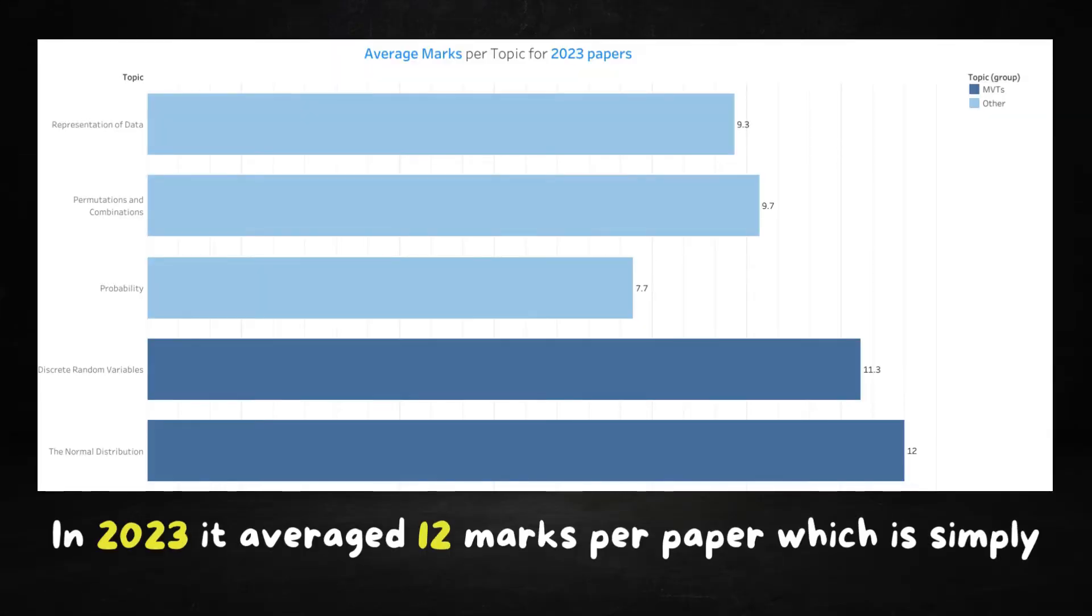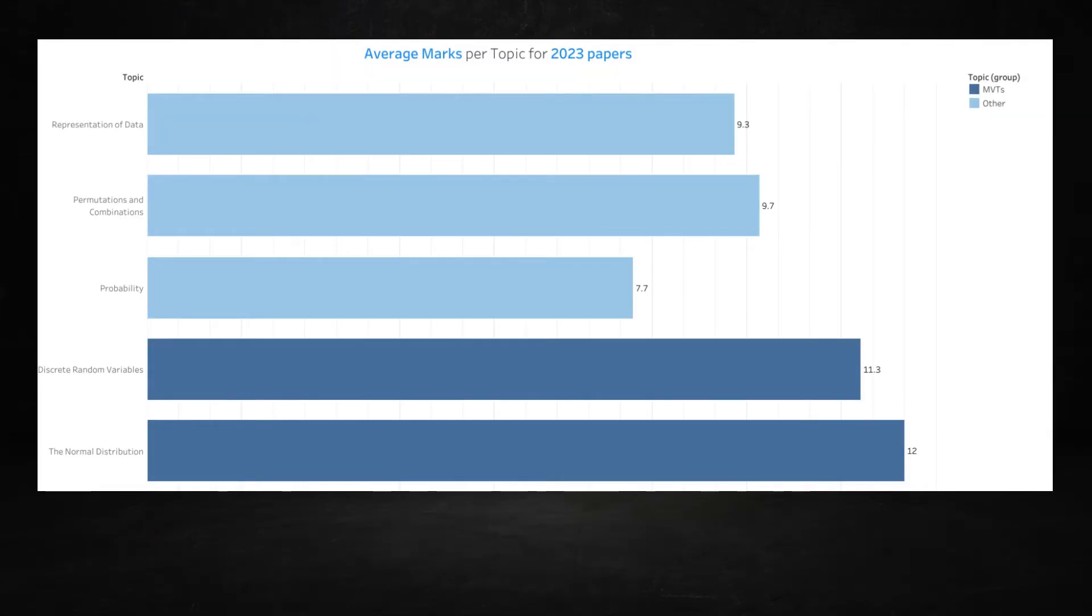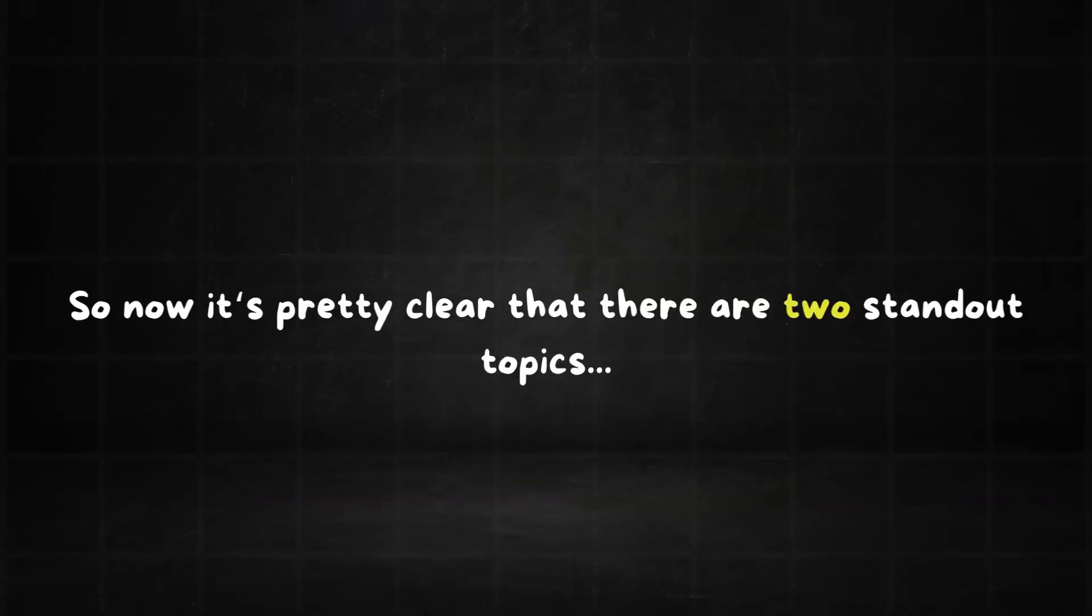In 2023, it averaged 12 marks per paper which is simply ludicrous. So now it's pretty clear that we have two standout topics. One on the decline and one on the uprise.